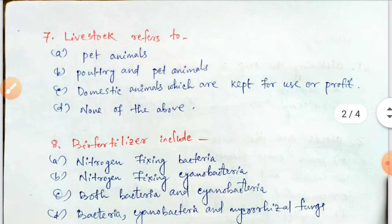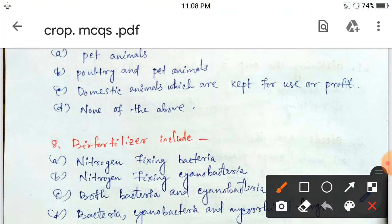Next question: livestock refers to — pet animals, poultry and pet animals, domestic animals which are kept for use or profit, or none of the above? Livestock refers to domestic animals which are kept for use or profit. That is option C.